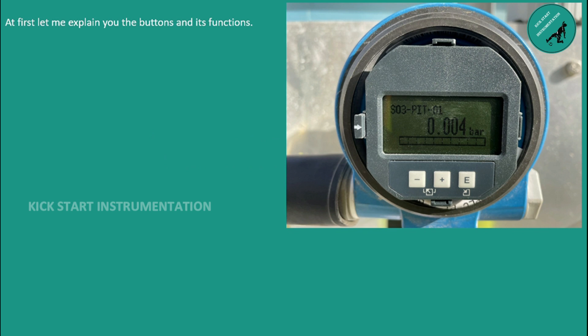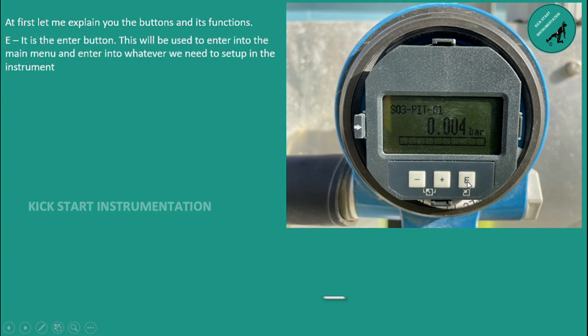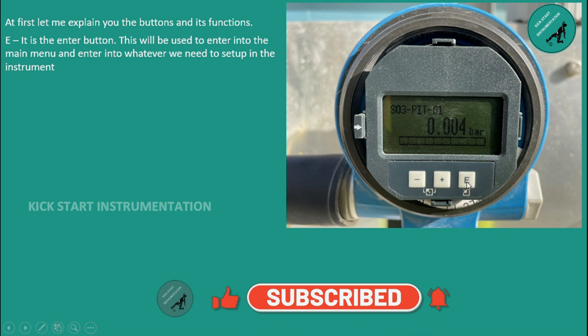At first, let me explain the buttons and their functions. E is the enter button. This will be used to enter into the main menu and enter into whatever we need to set up in the instrument.